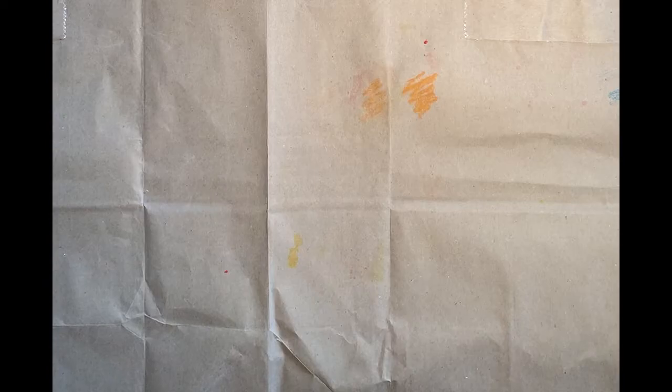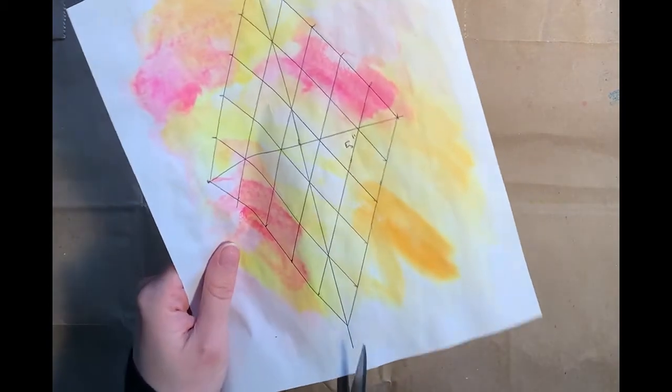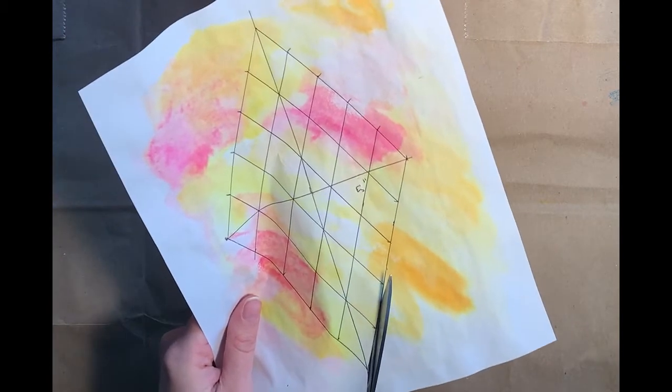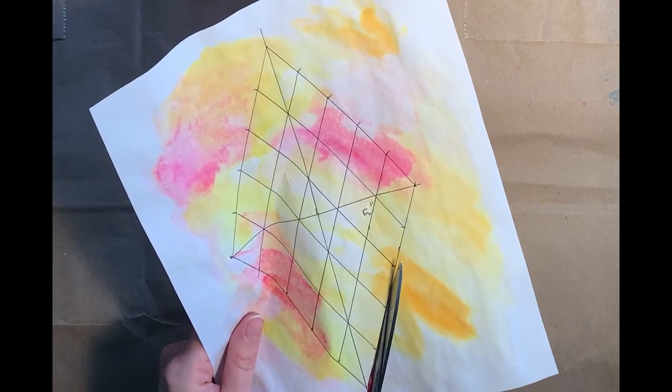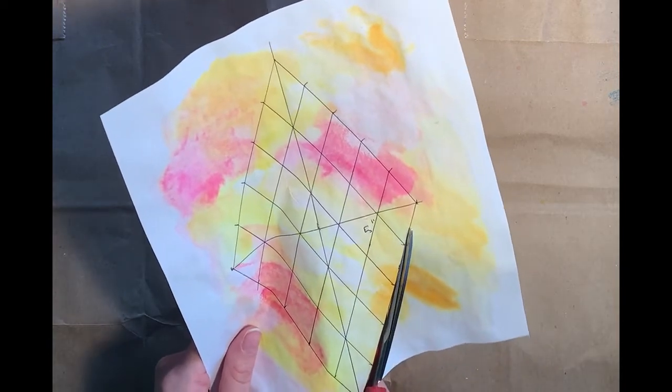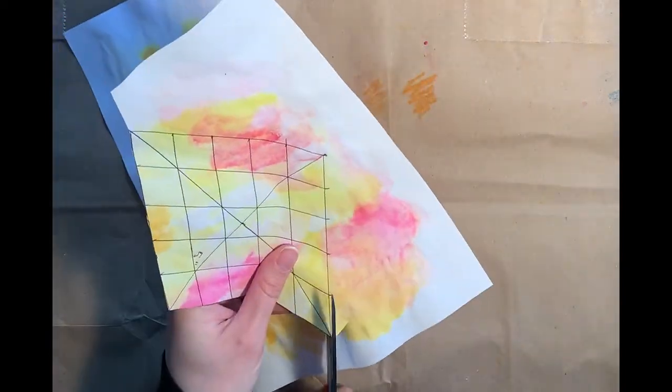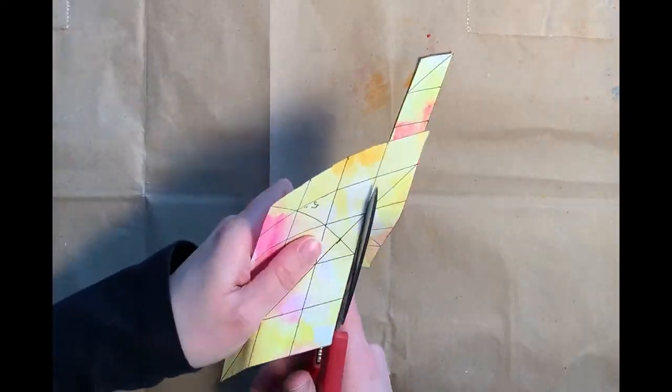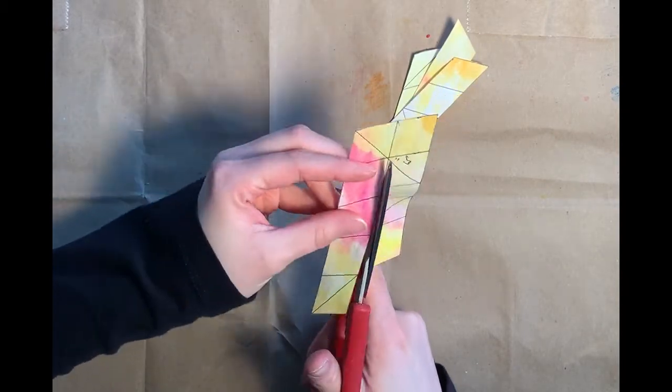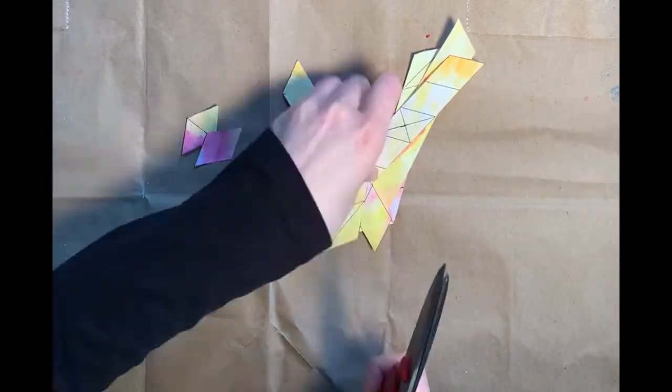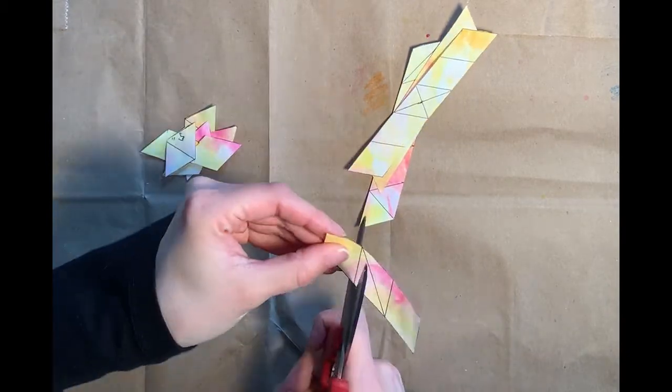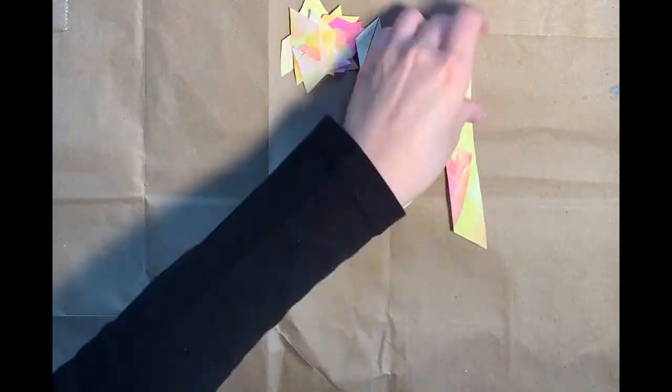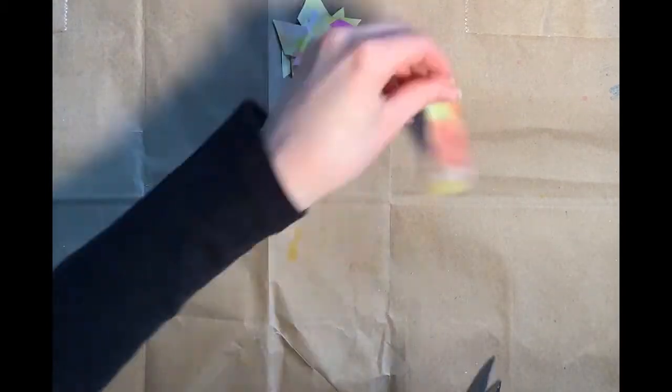All right, so now you should have your rhombus tiles drawn out on all three of your sheets, and you need to cut them out. So when you're cutting, be careful to only cut on the diagonal. If it helps, you can erase the two lines that you made at the beginning. So just go through and cut out every single rhombus from all three of your sheets. Make sure to keep your tiles in separate piles, light, medium, and dark.